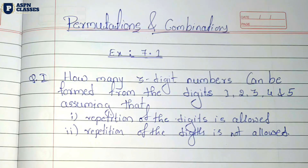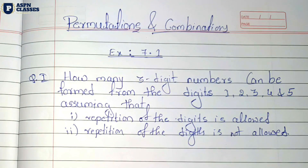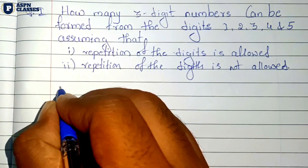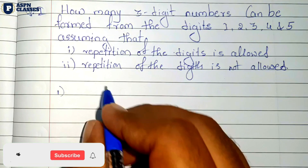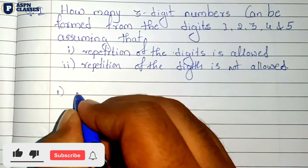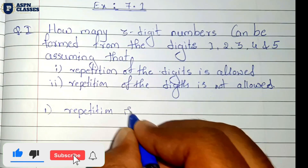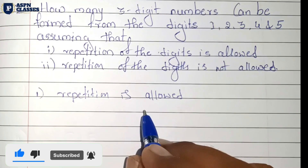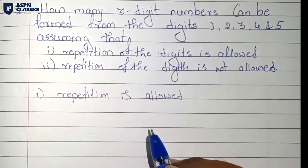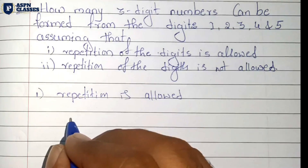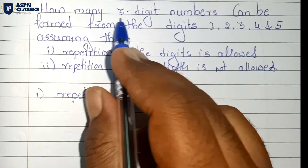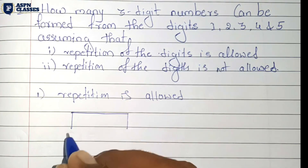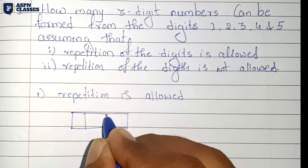This is the easiest question. The first part is where repetition is allowed. The same number can be used again. So, repetition is allowed. We have 3-digit numbers, so there are 3 vacant places.